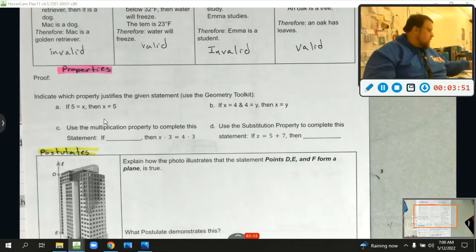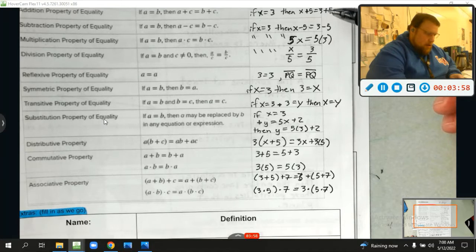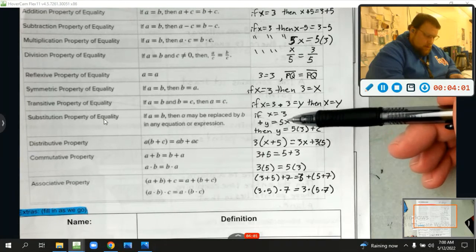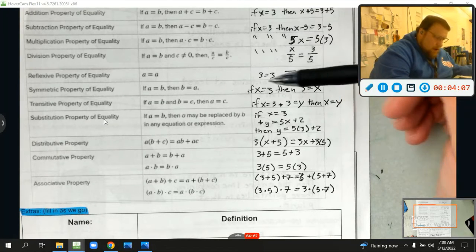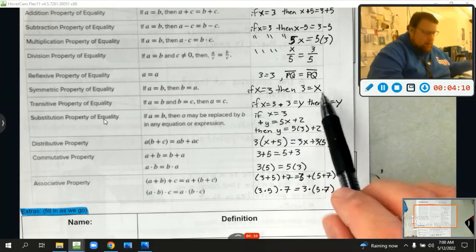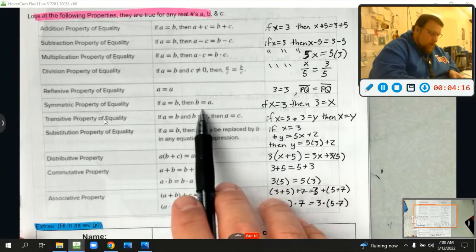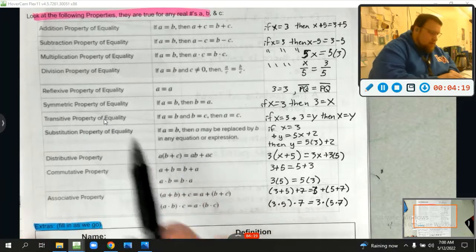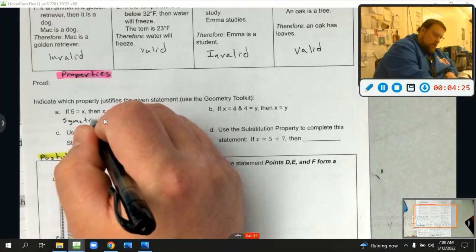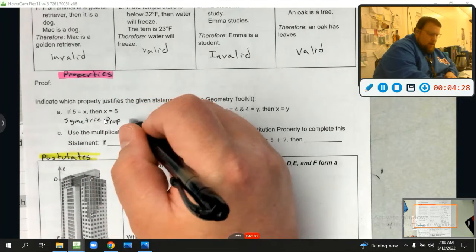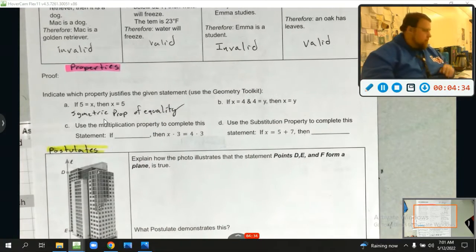So if 5 equals x, then x equals 5. Let's go look for one that looks just like that. If 5 equals x, is there any that's in the x equals department? Right here, if x equals 3, then 3 equals x. That's the same thing, just different numbers, right? And what is that? That is matched with, if I follow that back, it's A. If A equals B, then B equals A. That's the symmetric property of equality. Let's write that down. Symmetric property of equality.